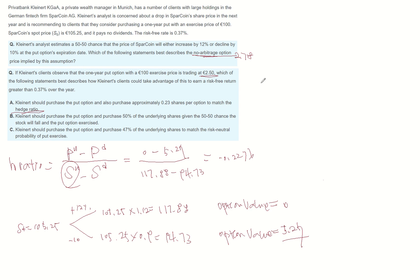The hedging portfolio's initial value equals the put price plus H-ratio multiplied by the stock price. So the initial value is 2.50 plus 0.2276 multiplied by 105.25.